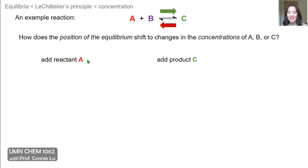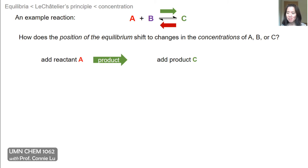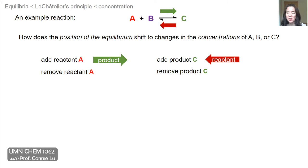If you add reactant A — if you increase A — the system wants to respond by decreasing A, so the equilibrium will shift toward product C. And if you add product C, the opposite will happen: the equilibrium will shift towards reactants A and B. You can also change concentrations by removing reactants and products. If you remove A, the reaction wants to form more reactants, so the equilibrium shifts toward reactants. If you remove product C, the equilibrium shifts to form more product.